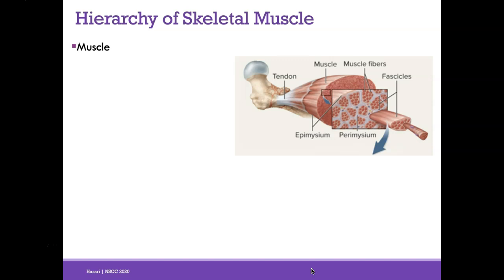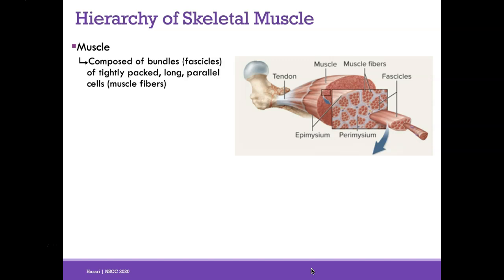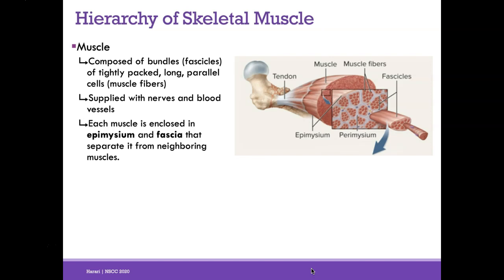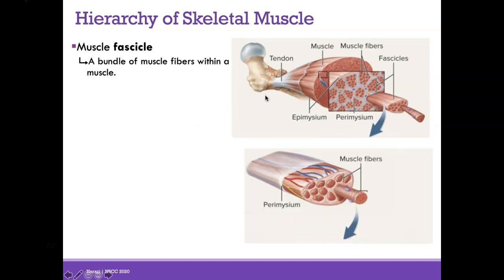Let's go step-by-step. A muscle is composed of bundles called fascicles of tightly packed, long parallel cells called muscle fibers. Muscles are supplied with nerves and blood vessels for nourishment and stimulation, and each muscle is enclosed in epimysium and fascia that separate it from neighboring cells. Tendons then attach the entire muscle to a bone.